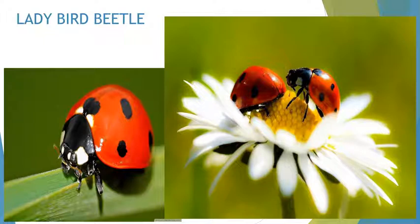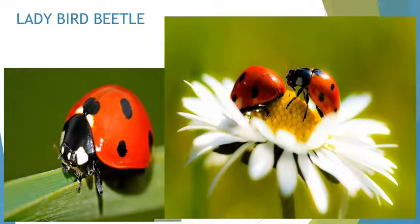Next one is the ladybird beetle. It eats a large number of pests that are harmful for plants. Do you know? Rearing or breeding of honeybees for collecting honey is called apiculture, while rearing of silk moths for getting silk is called sericulture.